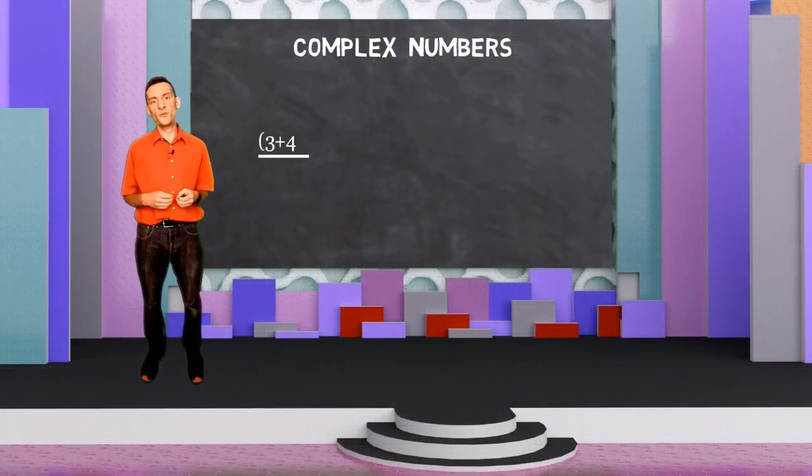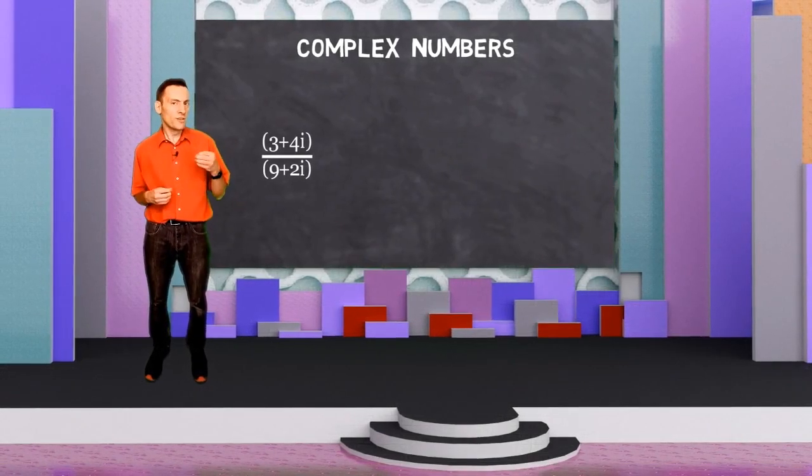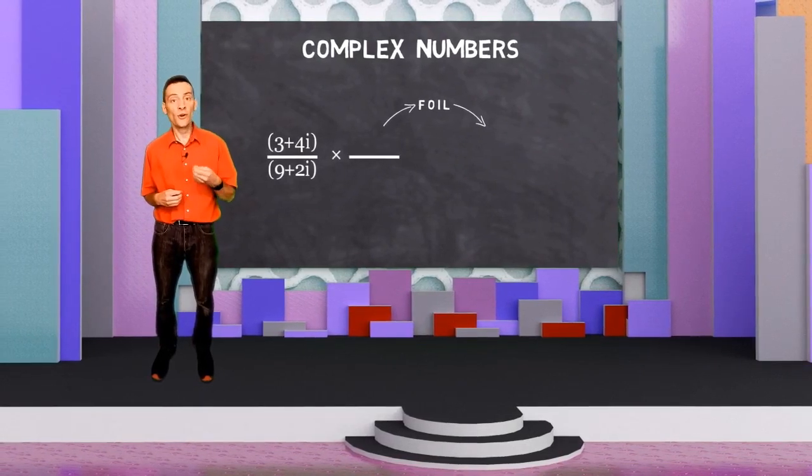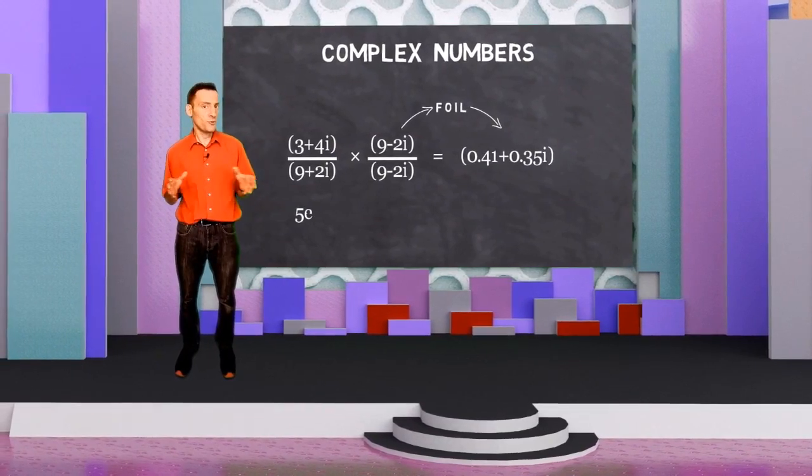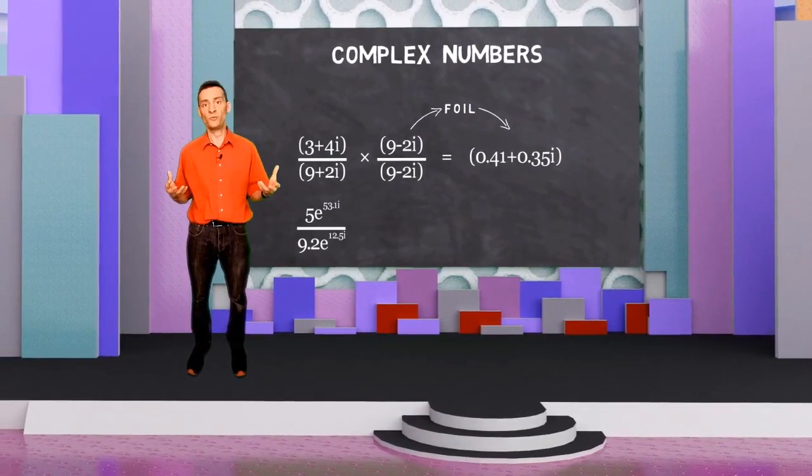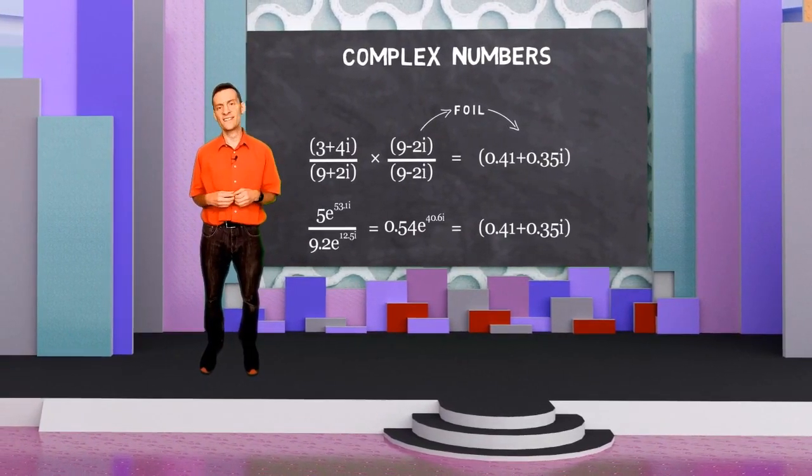So, when dividing two complex numbers, we can use the FOIL method together with the complex conjugate. However, it might be easier to convert the two complex numbers to their exponential form and divide those instead.